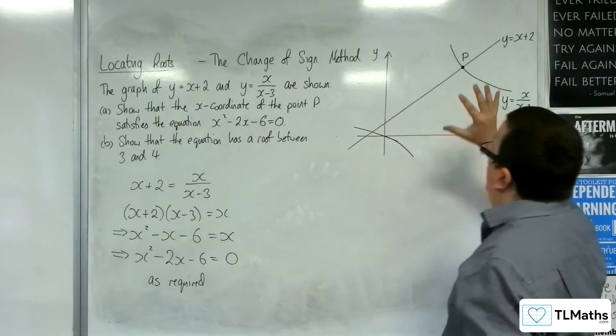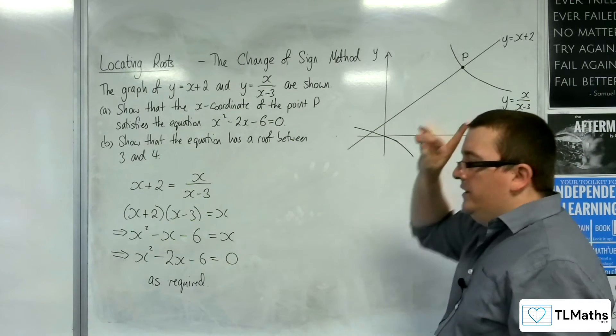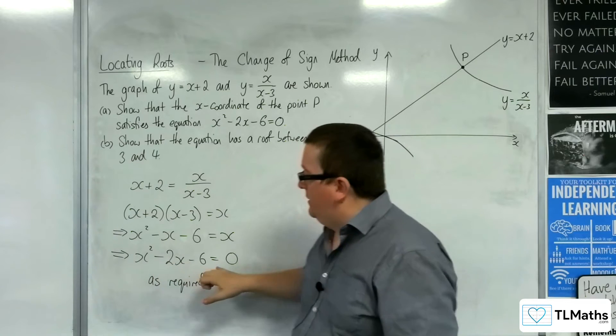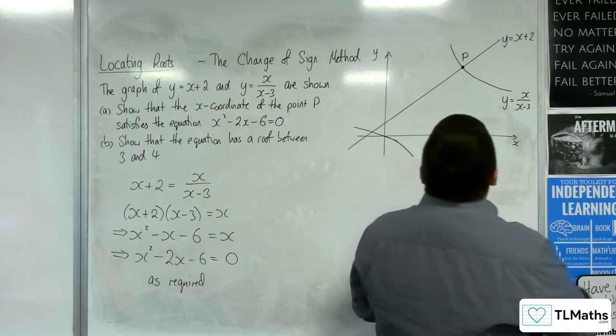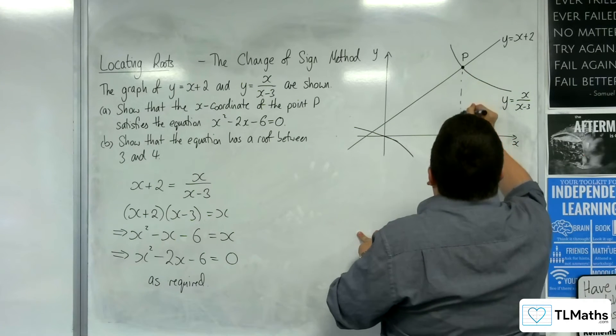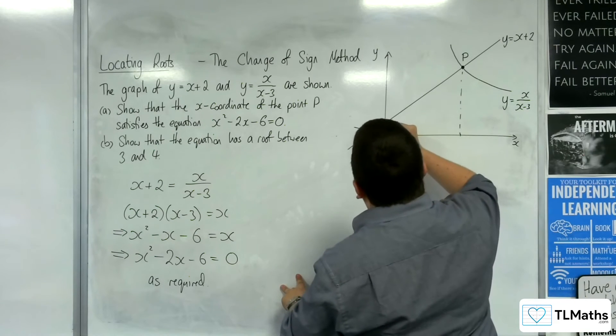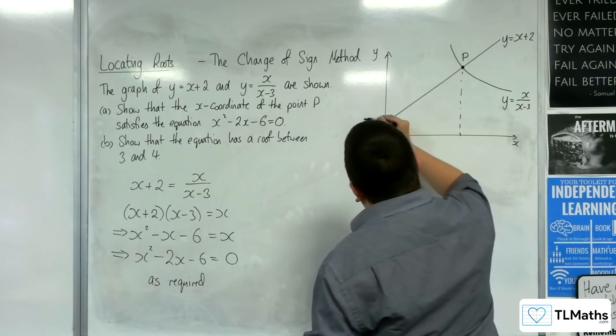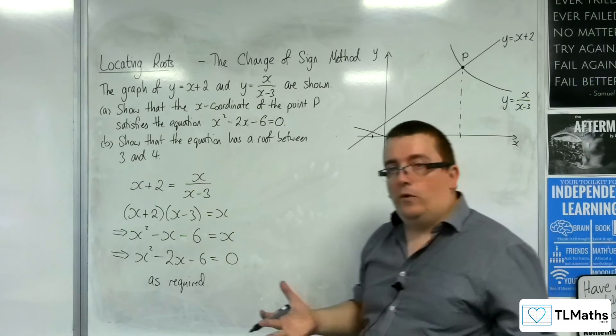So working out where the curve and the line intersect is identical to solving this quadratic equation, working out where this quadratic crosses the x-axis. Effectively, there's this point here and this point here, and this parabola will cross the x-axis at those two points. That's effectively what this is saying.